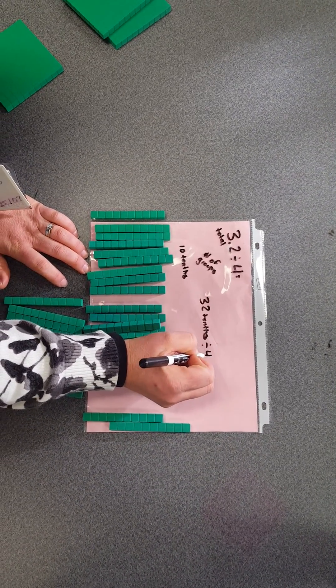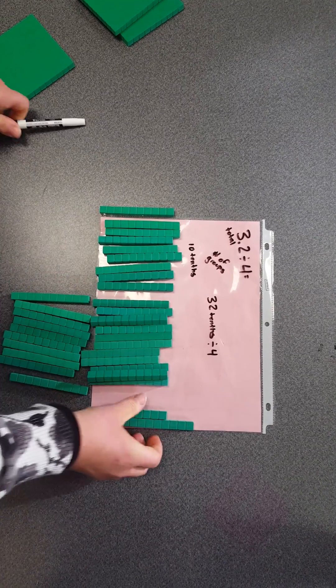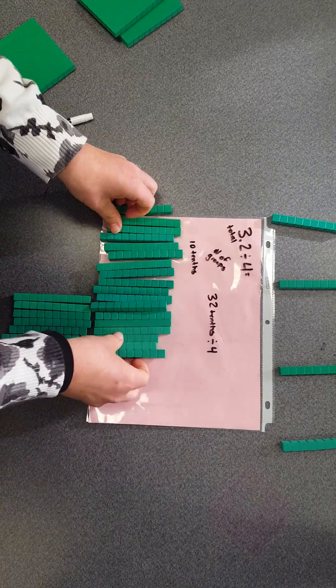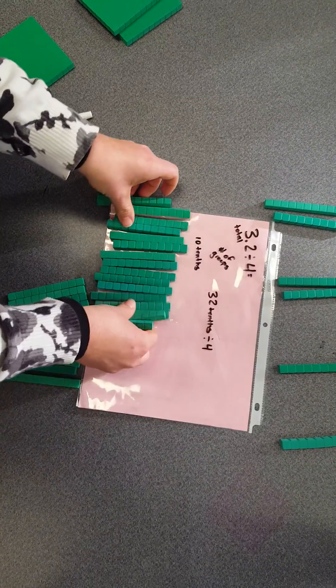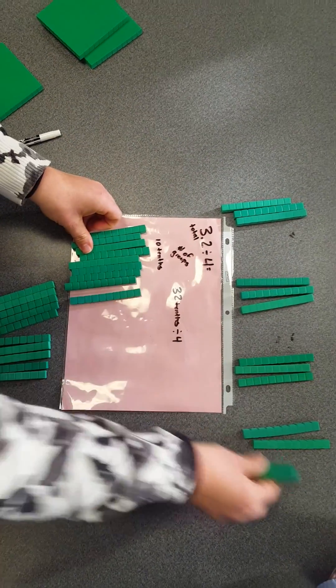And I'm going to divide it by 4 because I want 4 groups. This is very natural for students—this is like fair sharing, so they know to just divvy them out until they get rid of all their tenths.